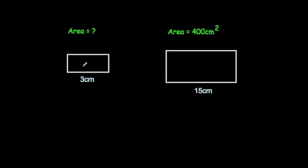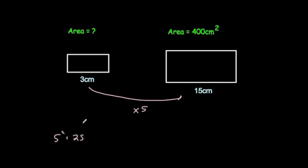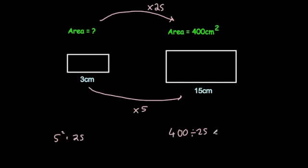Let's have a look at another one. We've got two rectangles, and the sides are 3 and 15, so the sides are 5 times bigger — the scale factor of enlargement is 5. That means for the areas it would be 25 times bigger, 5 squared. To get from the smaller area to 400, you'd multiply by 25, so to find the smaller one you divide 400 by 25, which gives 16. So the area of the smaller rectangle is 16 centimetres squared. Let's check: 16 times 25 is equal to 400.